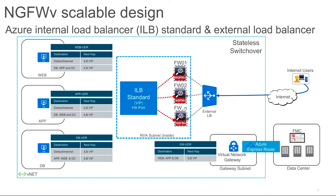The external load balancer is used for scaling out inbound connections, so any user coming from the internet can land on any firewall. When the firewall receives traffic, it sends it to the destination workload and source NATs it, because we need return traffic to come back on the same firewall. For outbound traffic, we use a different load balancer — an internal load balancer standard with HA port functionality. This ILB is used as a next hop in your UDRs, and once it receives traffic it forwards it to your firewalls.